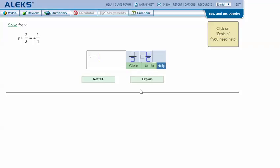Here's an example problem. Solve for V. V plus two-thirds equals four and one-fourth. Let's click Explain.